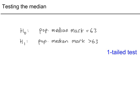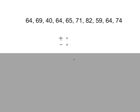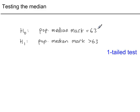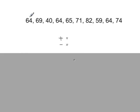Quite clearly a one-tailed test. These are the scores for the students from their test. What we're going to do here is compare every single data value with the population median of 63. So this first value is more than 63 — put a plus on top. 69 is more than 63 — put a plus. 40 is below 63 — put a minus, and so on.